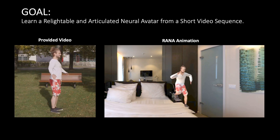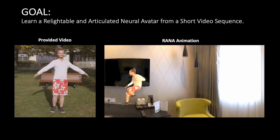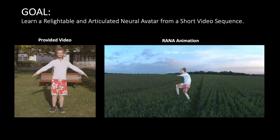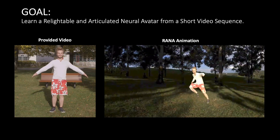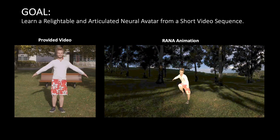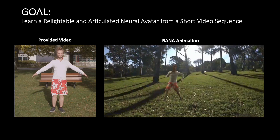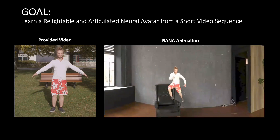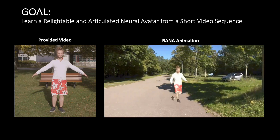Learning relightable neural avatars of dynamic humans from monocular RGB videos recorded in unknown environments is a challenging problem. It not only requires modeling the complex human body, but also needs to disentangle texture, geometry, and illumination, which is an ill-posed problem to solve from RGB images.